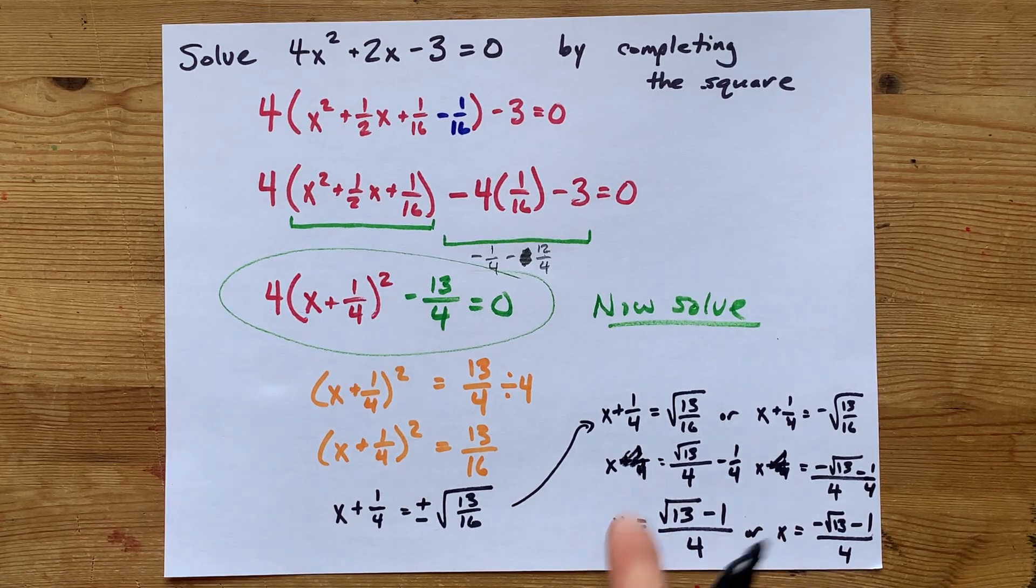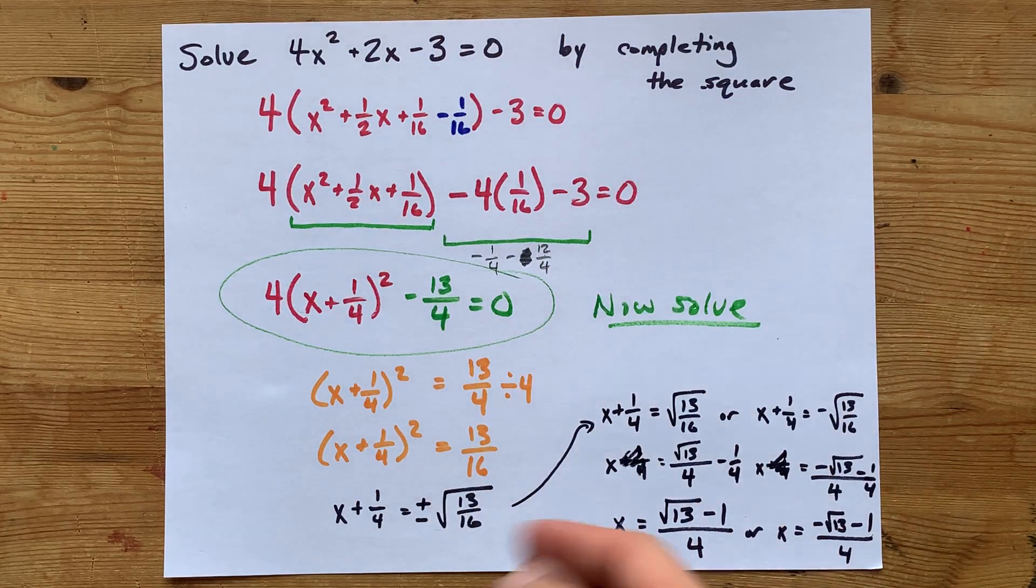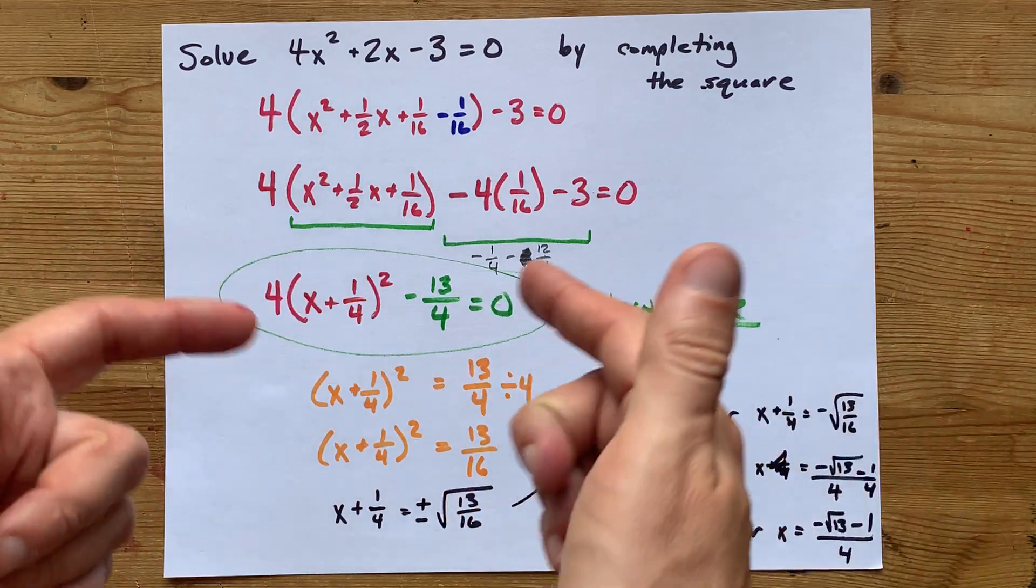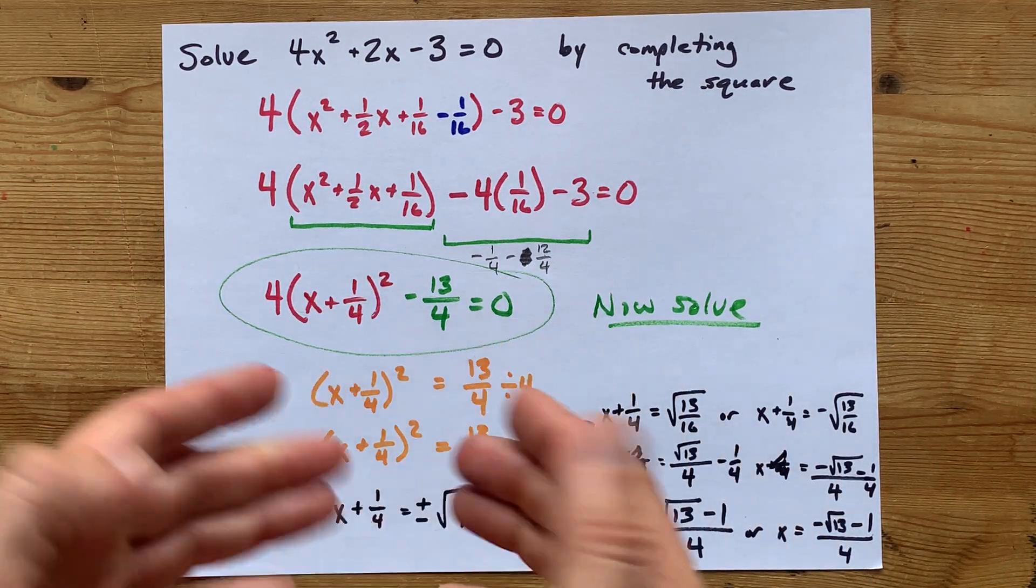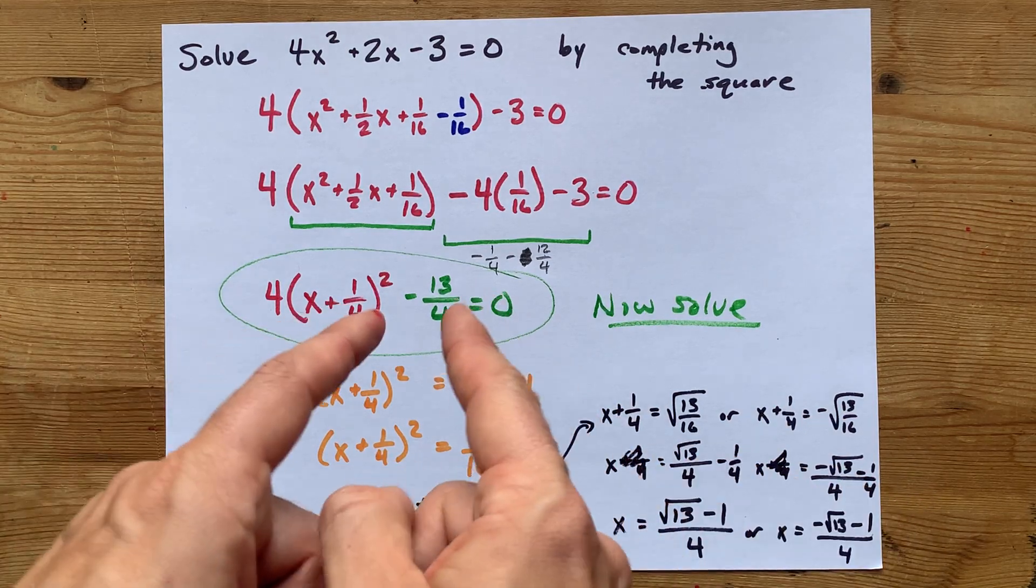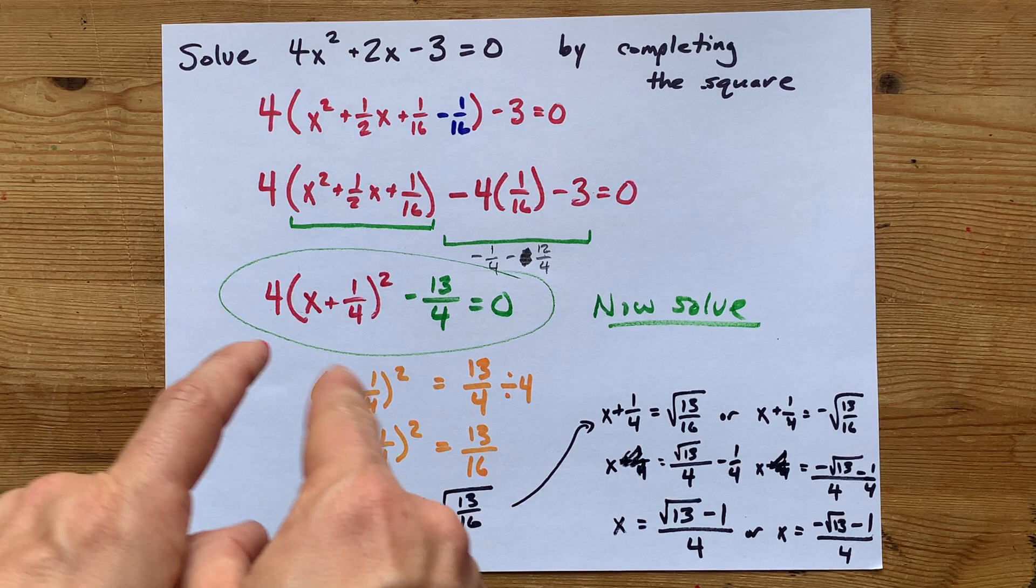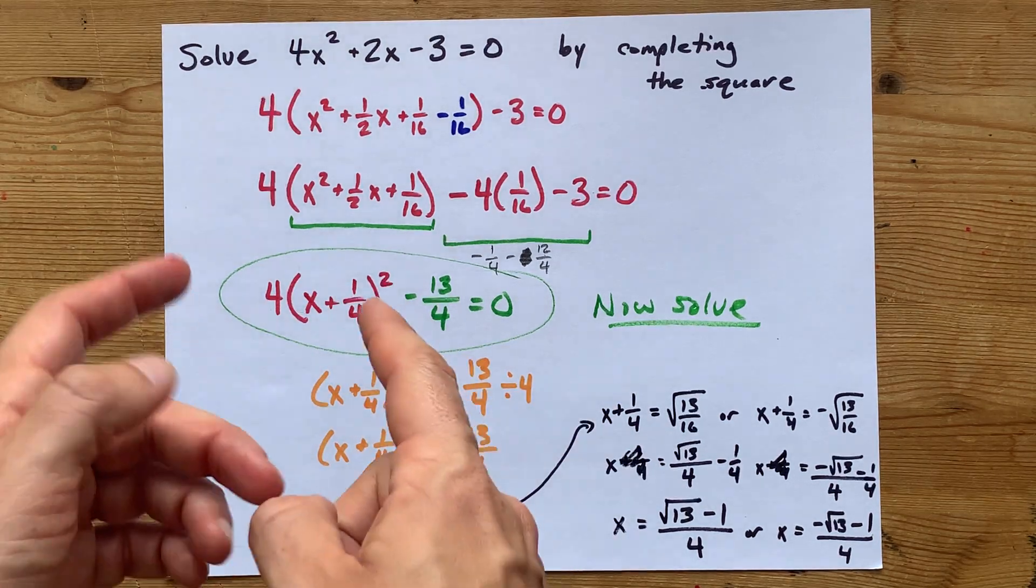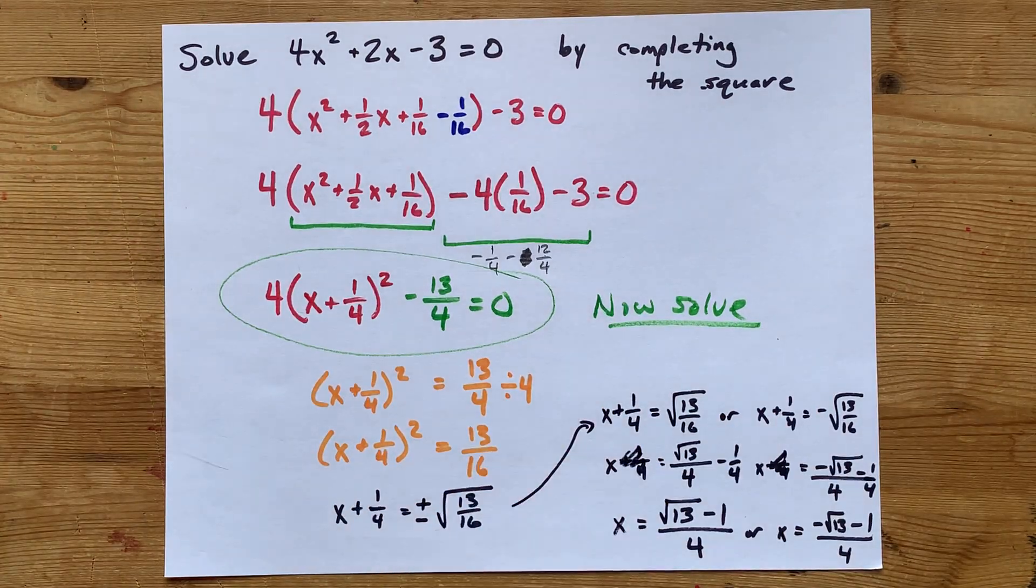Boy, do I wish that this would have had nicer numbers than that. And there we go. We solved it by completing the square. Step 1, complete the square. Step 2, use opposite operations to solve for the values of X that satisfy that equation there. Undo addition and subtraction. Undo multiplication. Undo the square. And then undo whatever was inside the brackets. In that order, one by one. Thanks for being with me, and best of luck.